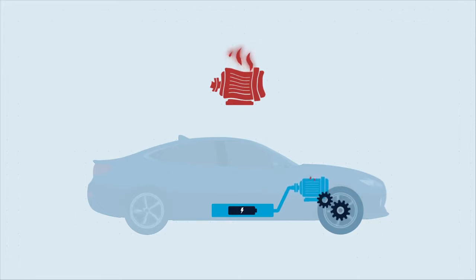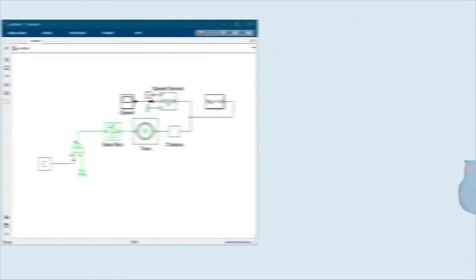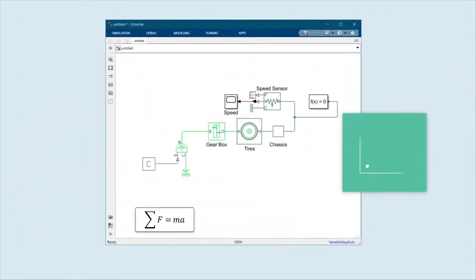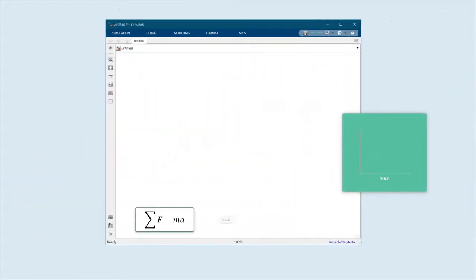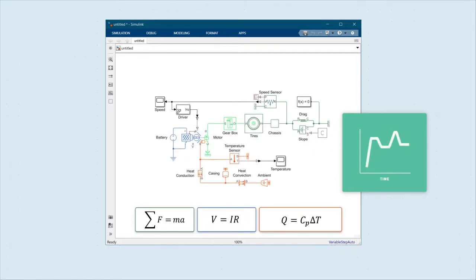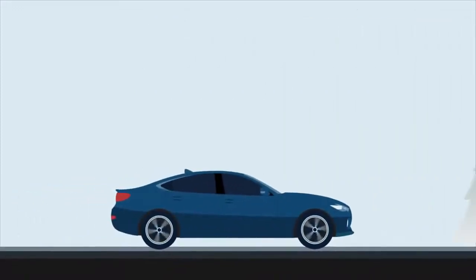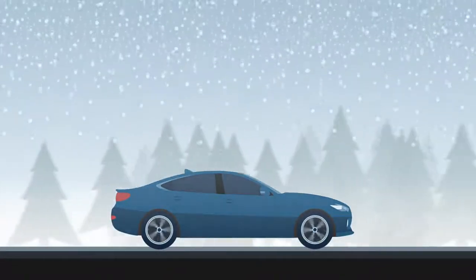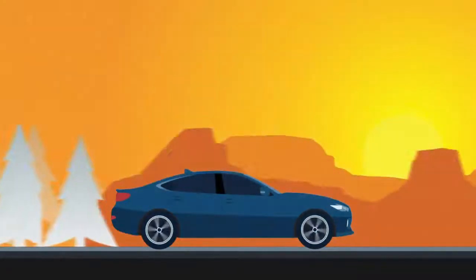With Simscape, we can easily add thermal behavior without re-deriving all the equations. Simscape takes the component equations for each block and derives the equations describing the entire system based on how you connect these blocks. To make sure the system works no matter how hot it is outside, we can take our virtual car anywhere, from Siberia to the Sahara, without leaving our desk.